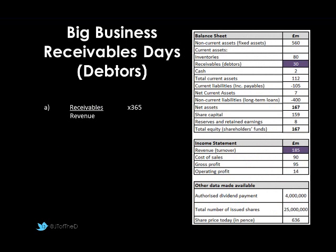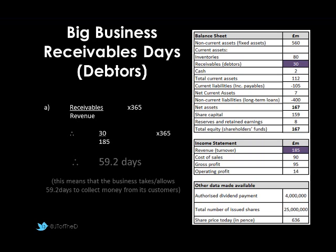Looking at receivables days — our debtor days — this relates to our customers. The figures are receivables of £30 million and revenue of £185 million. We're trying to find out how long on average customers are taking to pay us. The formula is receivables divided by revenue, multiplied by 365 days. So 30 divided by 185, multiplied by 365, gives 59.2 days. This means the business allows customers 59.2 days to pay their debts — about two months.